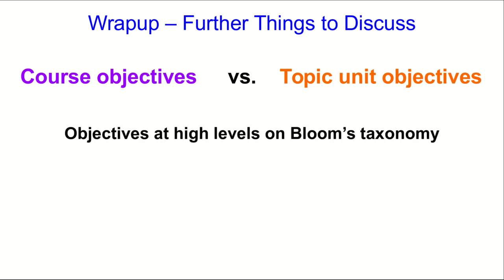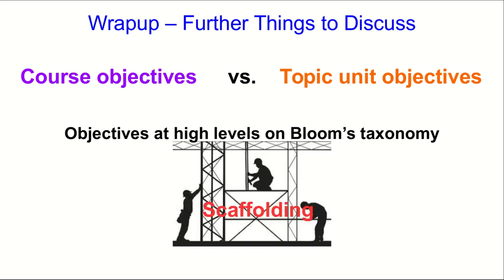Finally, if you identify an objective that is at a high level on Bloom's taxonomy, it's usually not reasonable to just throw the students into the deep end and expect them to achieve that objective on their own. You usually have to do some scaffolding, and that means leading them through lower levels of Bloom's taxonomy to build up their skills so that they're able to achieve the high level objective.